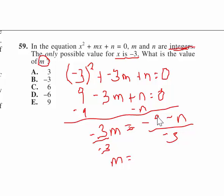minus 9 divided by 3, minus 3 is a positive 3. And this minus n divided by a minus 3, minus divided by a minus, is going to be a positive. So, it's going to be 3 plus n over 3.